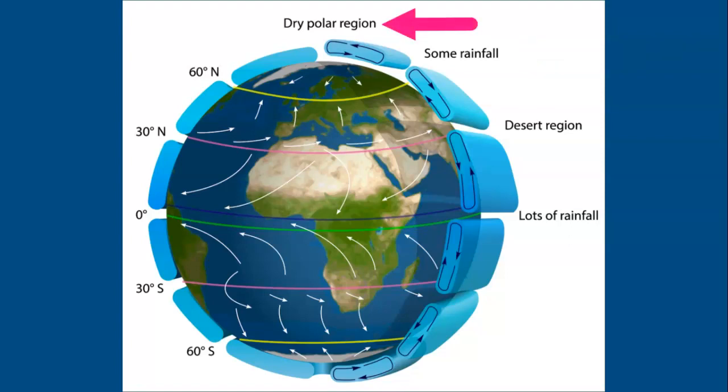and then at the north and south pole, at 90 degrees, you have another region of dry deserts. In fact, Antarctica is Earth's biggest desert.